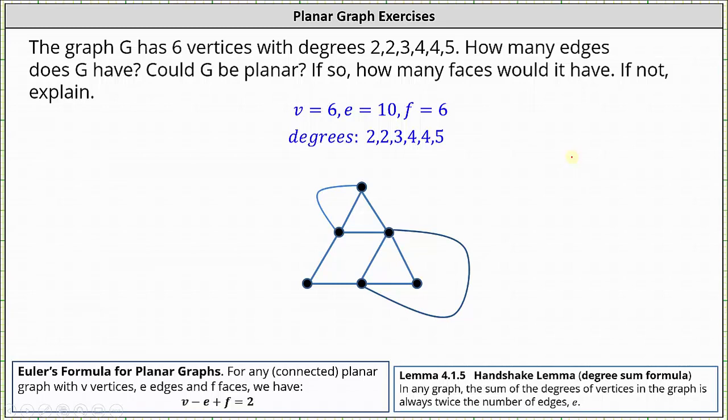I was able to find one. Again, we need a graph with six vertices, 10 edges, six faces, and the degrees of the vertices must be 2, 2, 3, 4, 4, 5, and the graph must be connected with no edges crossing.